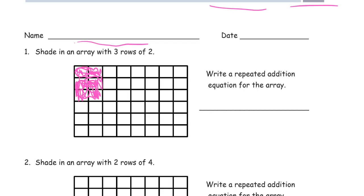Now a repeated addition equation for the array. We're talking about three groups, right? Instead of rows, think groups. So it's three groups of two, so that's three twos. Two plus two plus two equals six.